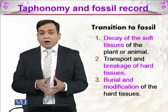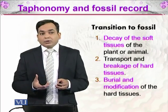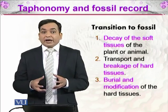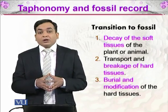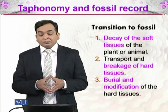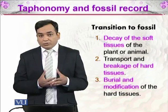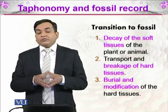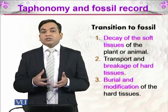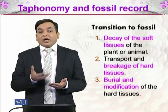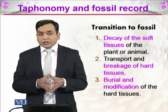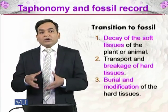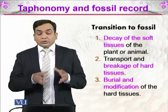After that, there will be transport and breakage of the hard tissue. Sometimes there are scavengers — large animals feeding on dead animals — or herbivores eating plants. They are breaking and transporting those remains, so tissues move from one place to another. That is why we can find fossils in places where they shouldn't be, which may be due to transport. For example, a flood could carry remains to a riverbed.